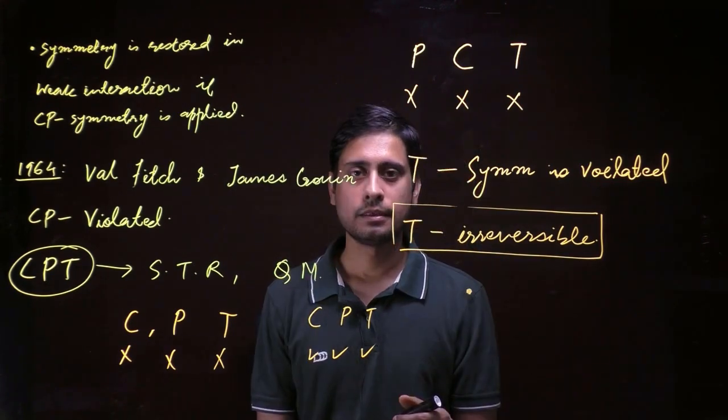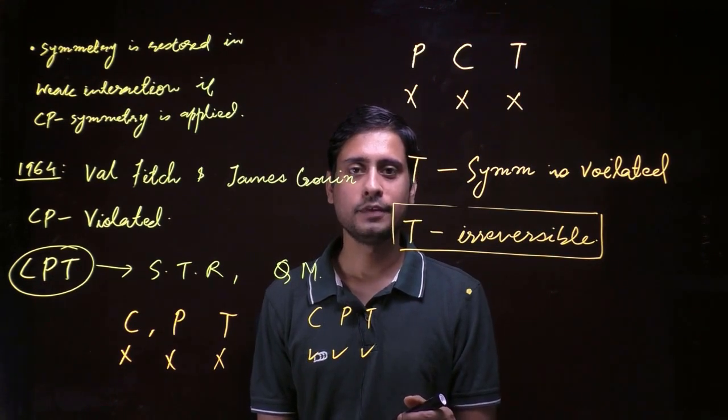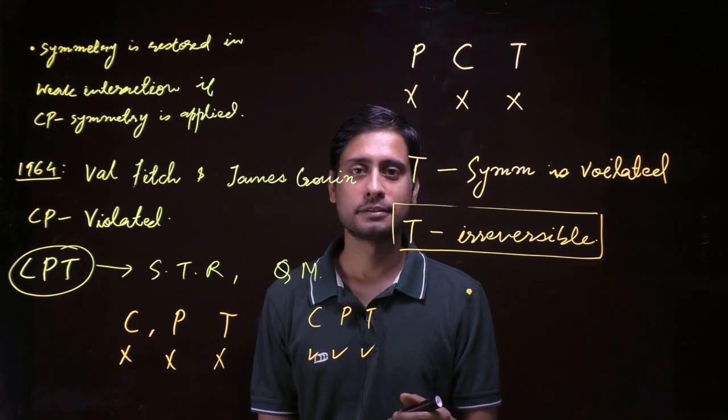We have now reached our final conclusion. A single particle interacting via weak force is not time-symmetric — it suggests an arrow of time, called the weak arrow of time. In the next lecture, we will discuss the quantum arrow of time. Please like the video, subscribe to our channel, and thanks for watching.